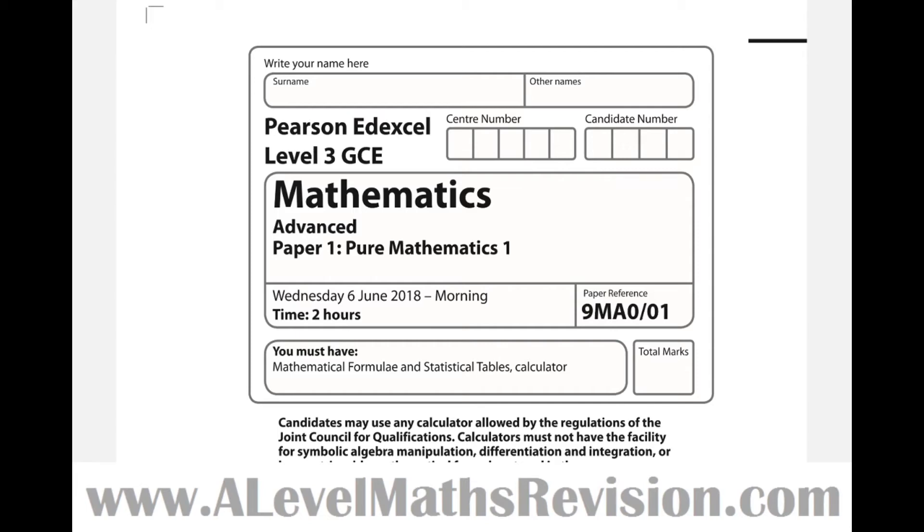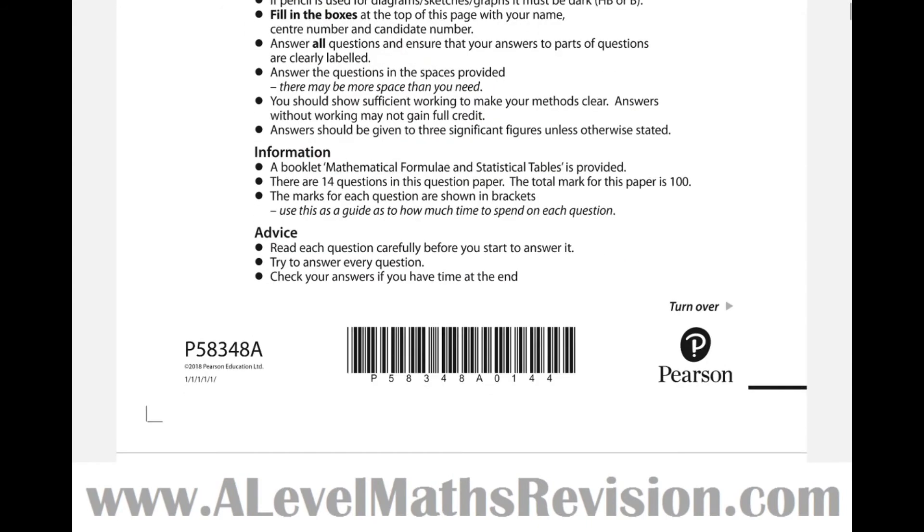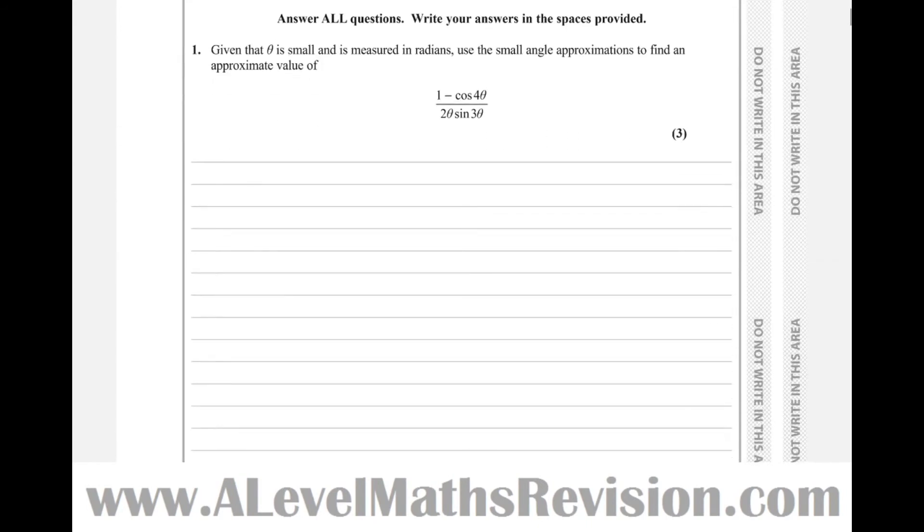These are the solutions for the NXL A-level maths paper one. Starting with question one, it said given that theta is small and measured in radians, use the small angle approximations to find the approximate value of that.